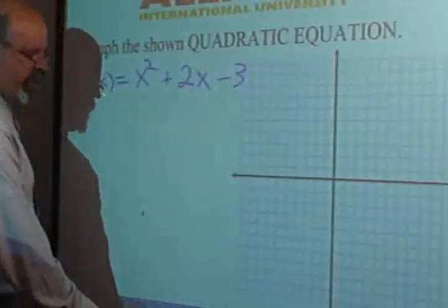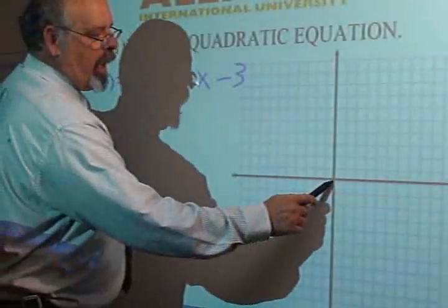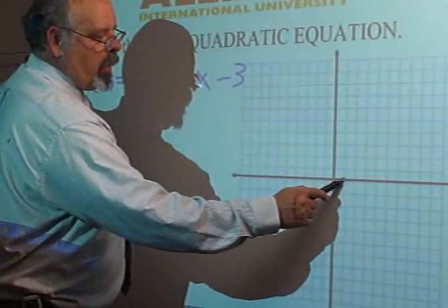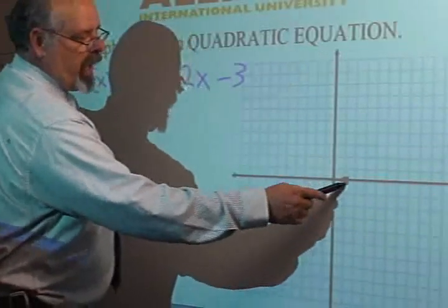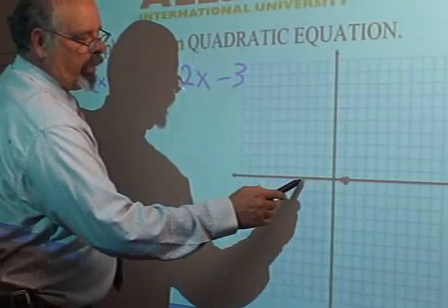Mark them on your graph at 1. That is a point on the graph at negative 3. 1, 2, 3 this way. Okay?